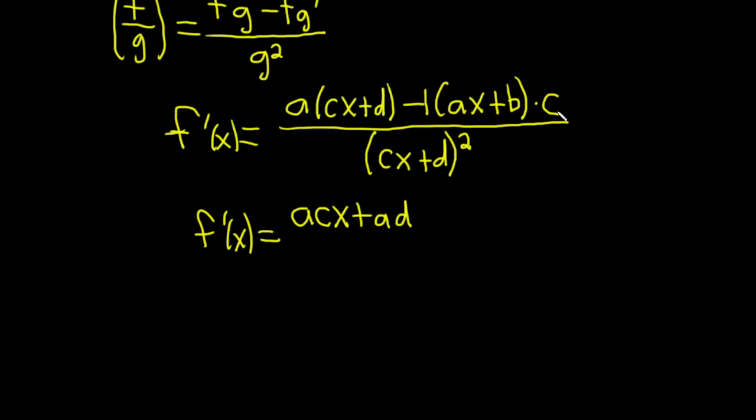Here there's really a minus 1, and we have a c here. So minus 1 times ax times c is minus, oh look, acx, and minus 1 times b is minus bc. We also have the c there. All of this is being divided by parentheses cx plus d, and all of that is squared.